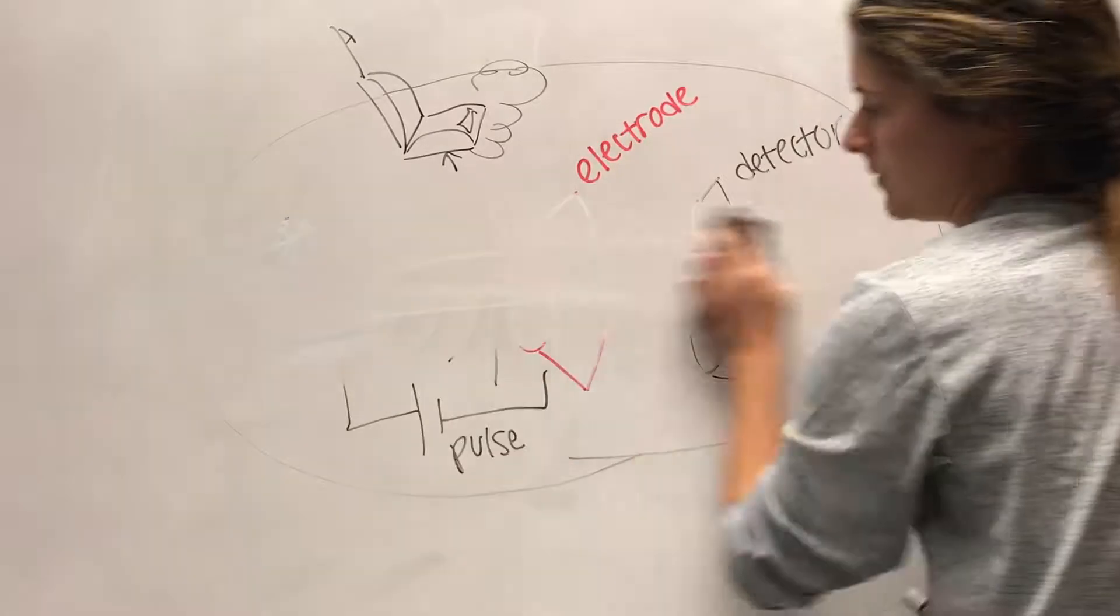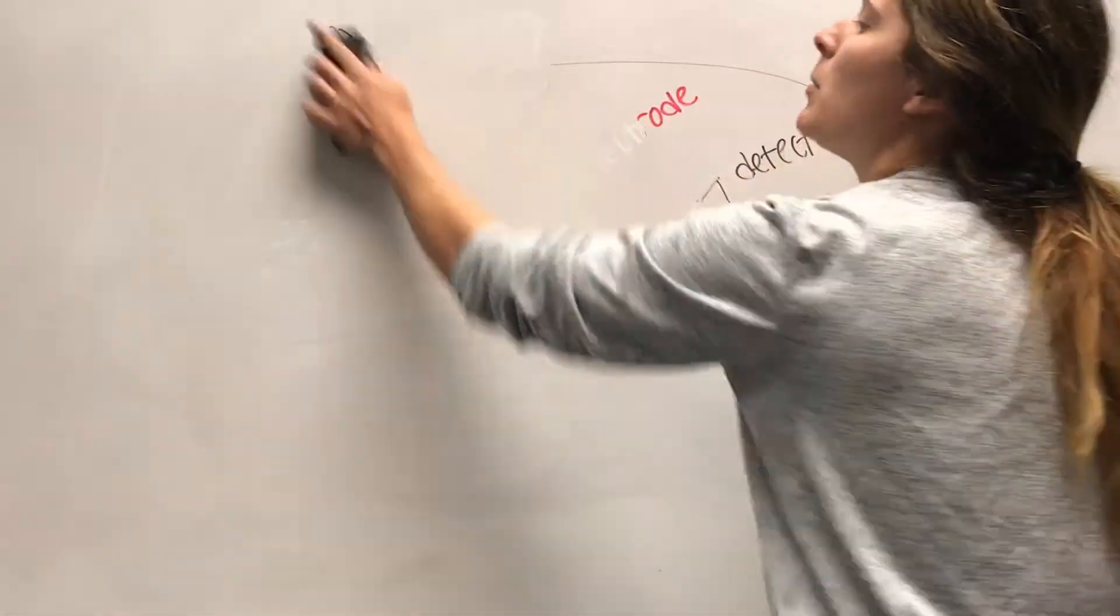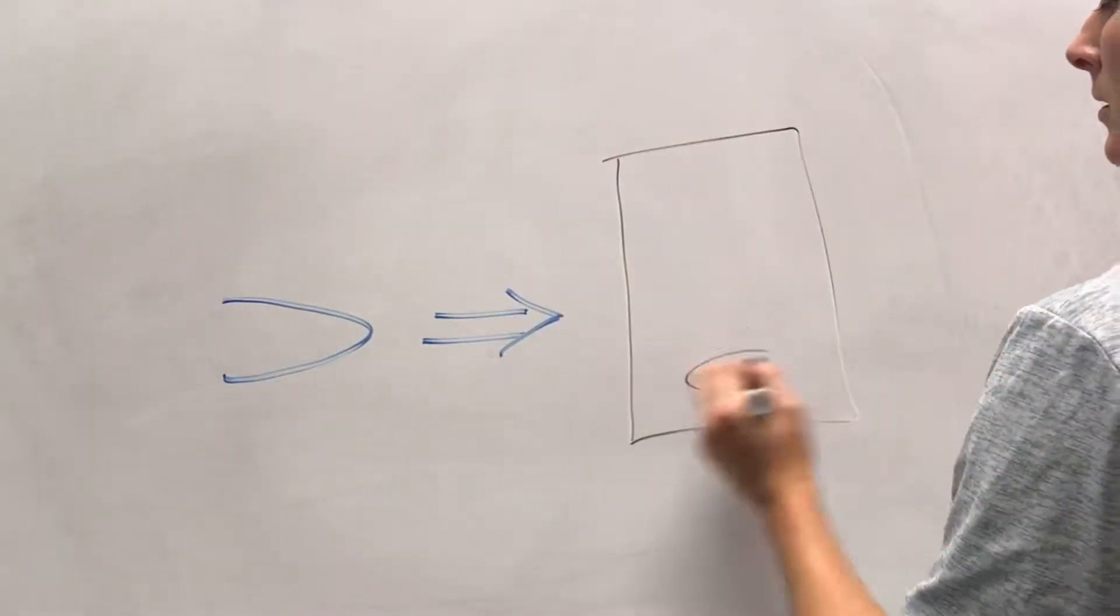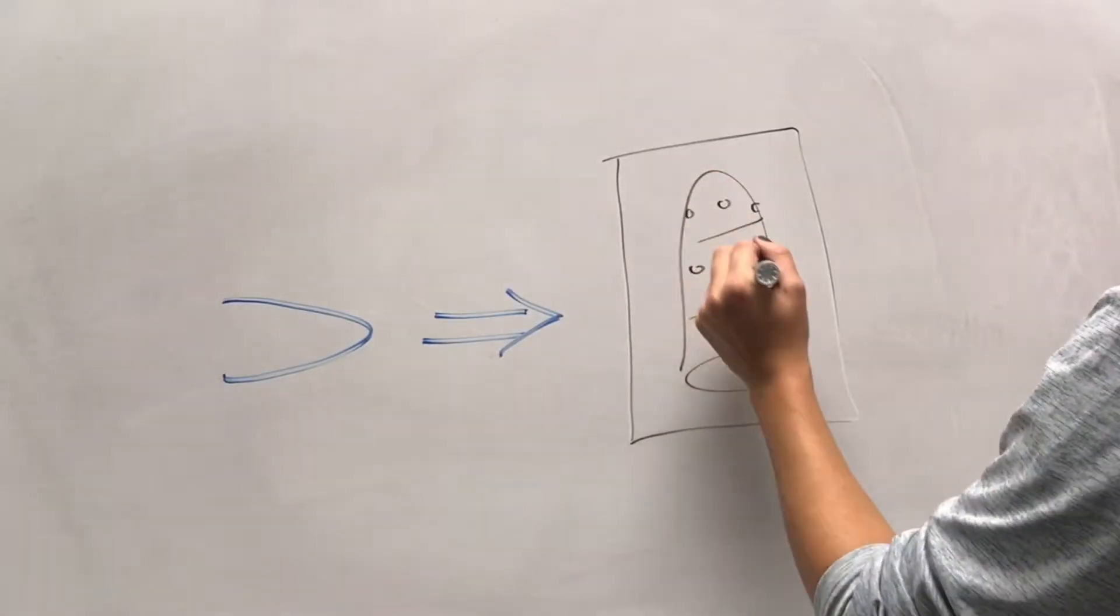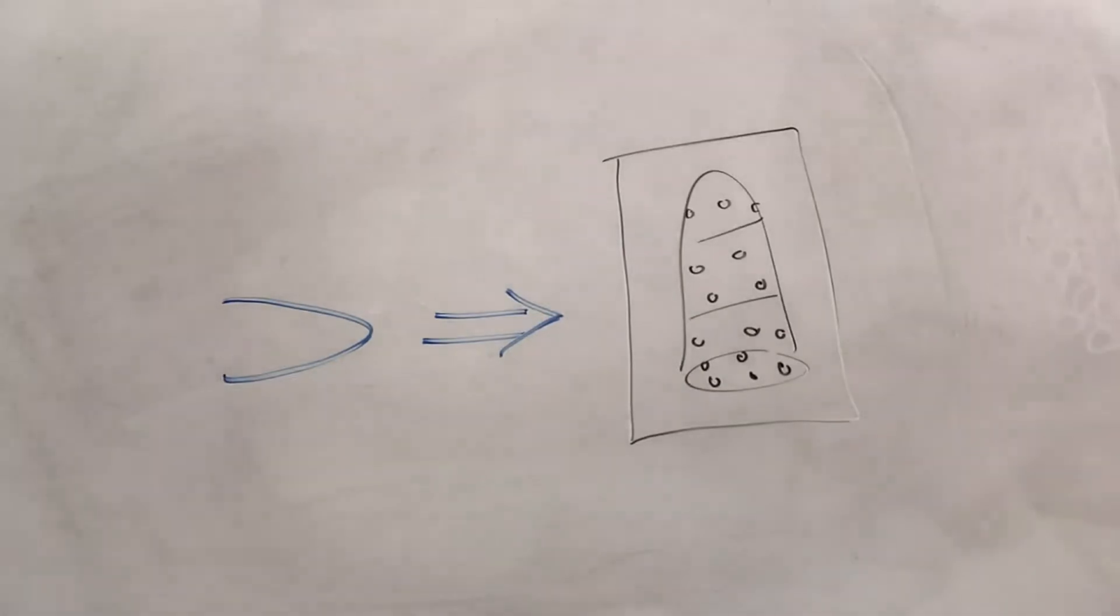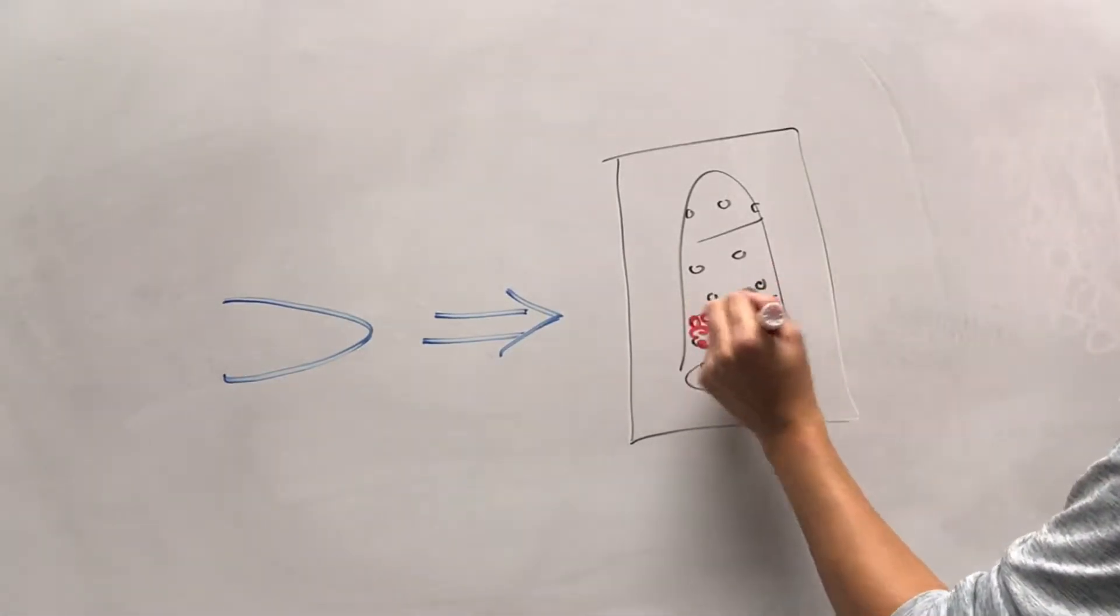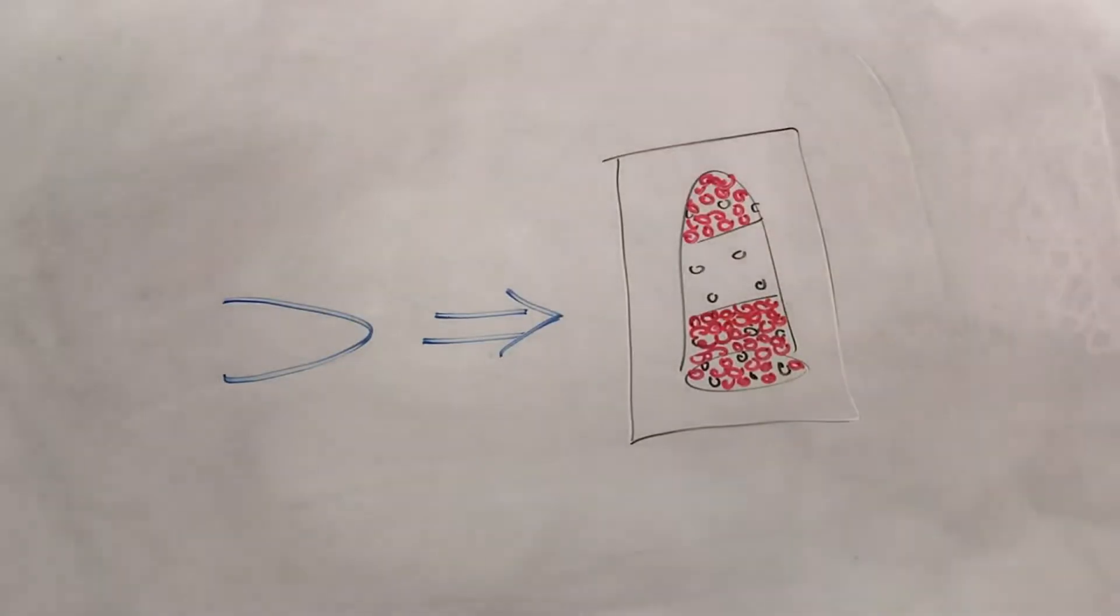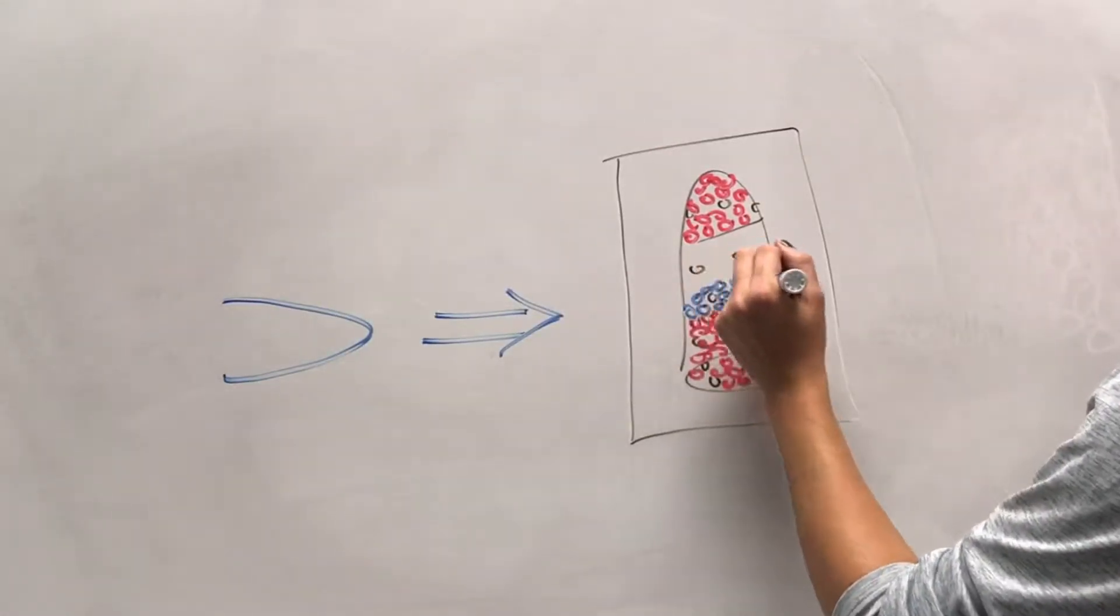Once the atom evaporates, it follows along the electric path and collides with the 2D detector. Because voltage is a pulse, the detector can properly measure how long it took for the atom to reach the detector. This time depends on the mass of the atom, which gives us the atom identity. Location of where the atom collides with the 2D detector determines spatial location of the atom in the sample.